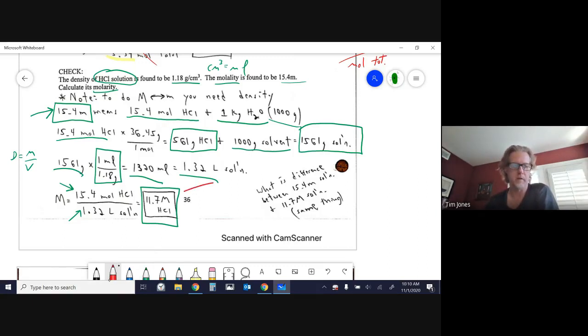Now notice that the molarity here of the same exact solution is lower than the molality value, and that is usually how it works out. One way to think of it is molality is per solvent, molarity is per the whole solution, so it makes sense that molarity would be a smaller number. And I mentioned this right here just to make sure people realize we're talking about the exact same solution. A 15.4 molality of this particular HCl solution is the same as 11.7 molarity. No difference. We could also calculate its percent, its mole fraction and so on, and they'd all be the exact same solution.